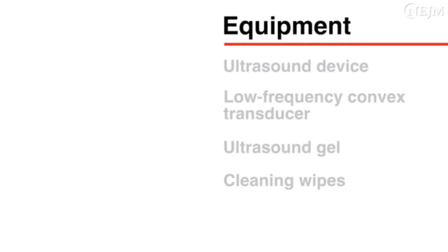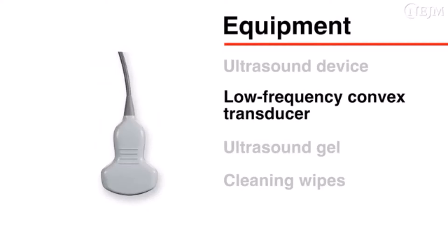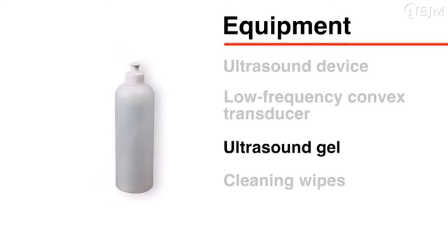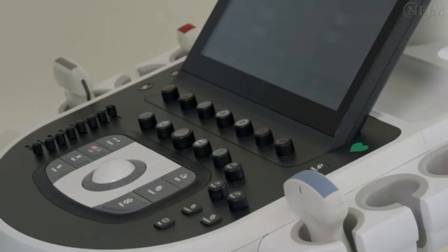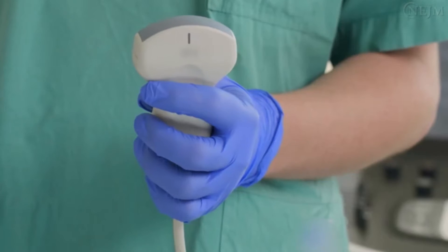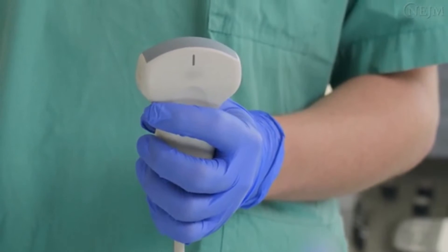To perform point-of-care lung ultrasonography, gather the necessary equipment: an ultrasound device, a low-frequency convex transducer, ultrasound gel, and cleaning wipes to decontaminate the equipment after the examination. Although the examination can be done with various types of probes, convex and micro-convex are the ones most widely available and suitable to perform the study.